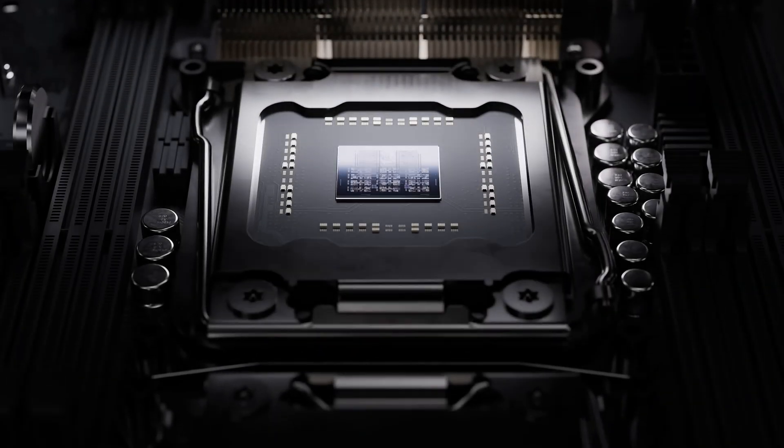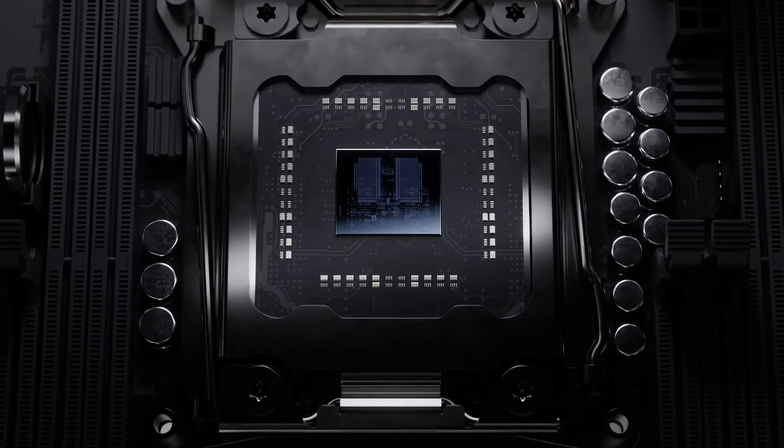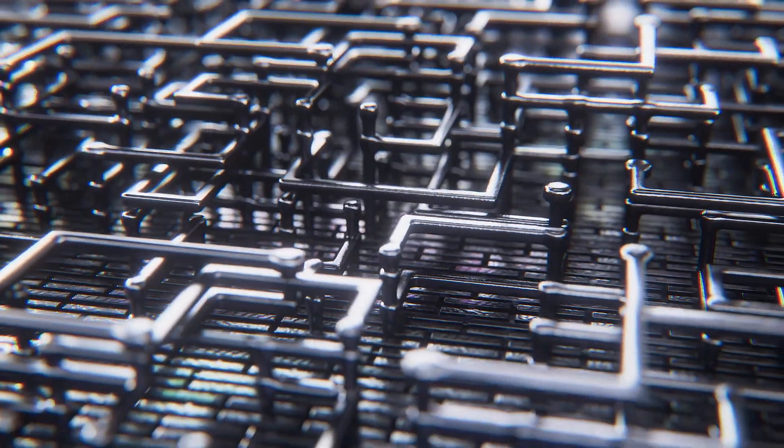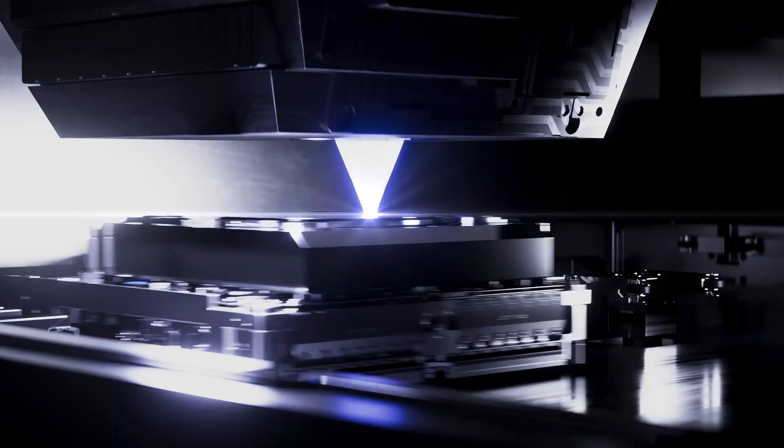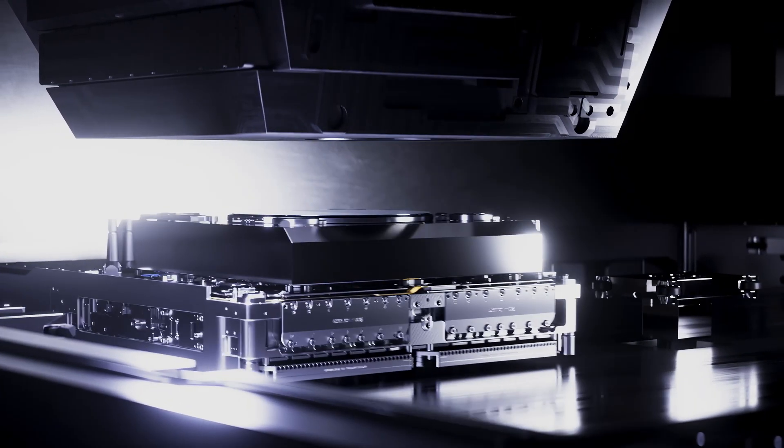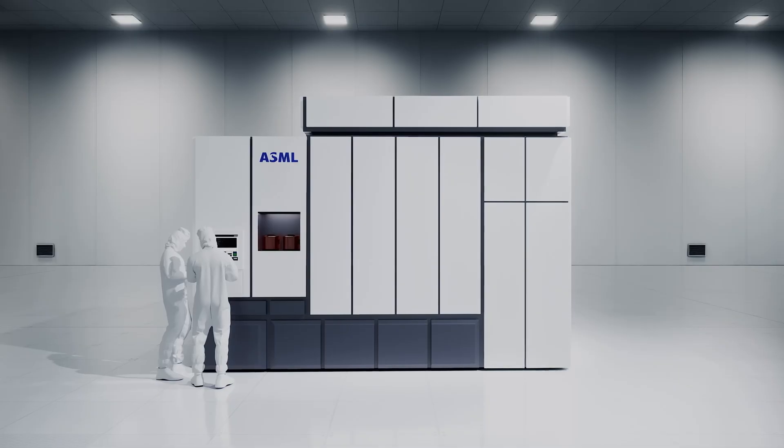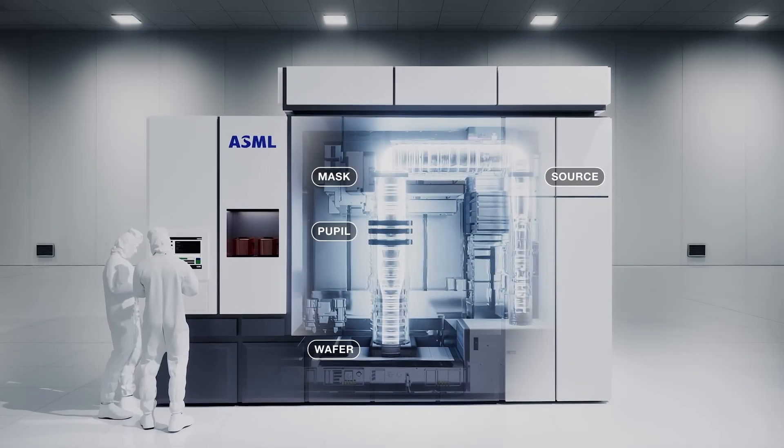But how do you actually put those designs onto a wafer? Well, it turns out that we've been doing it the same way for the last half decade and a bit: photolithography. The process is remarkably simple. You apply a coating to the wafer, and then use a mask to selectively harden the coating in the areas that you want to keep or remove, and then just chemically etch the unprotected areas away.